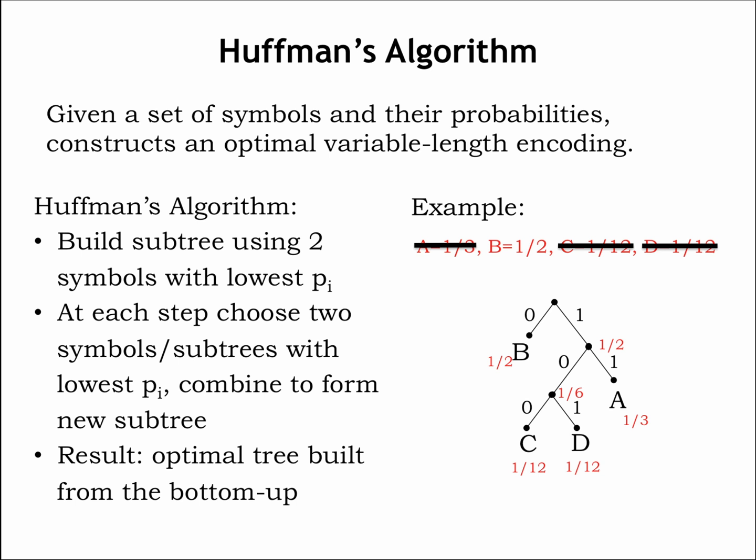Happily, this is the code we've been using all along! As mentioned above, we can produce a number of different variable length codes by swapping the 0 and 1 labels on any of the subtree branches.